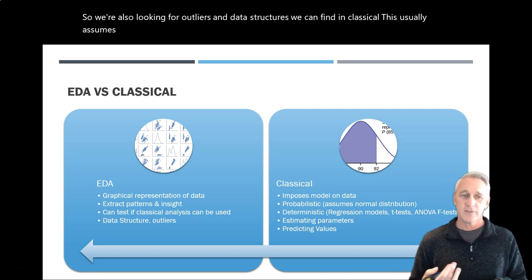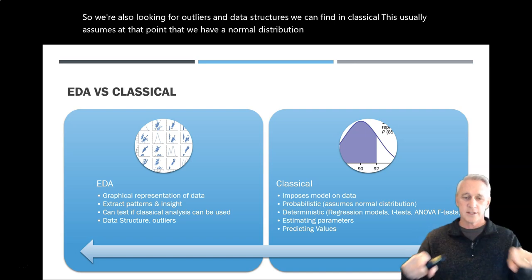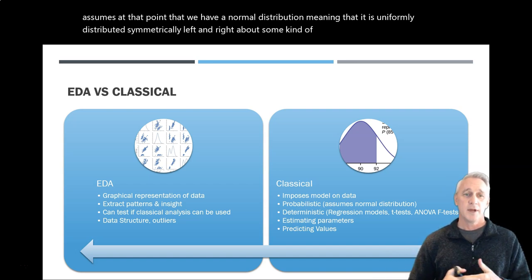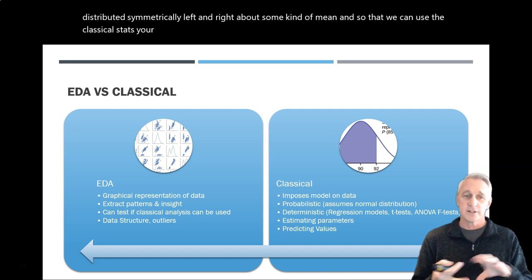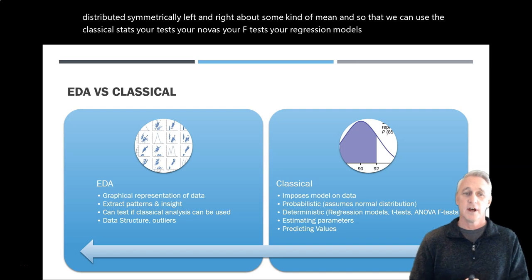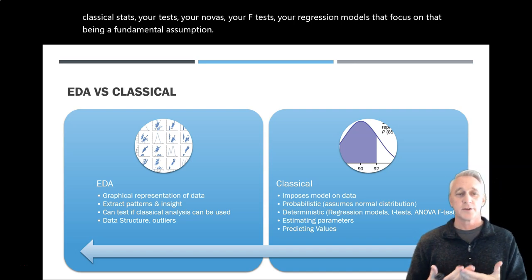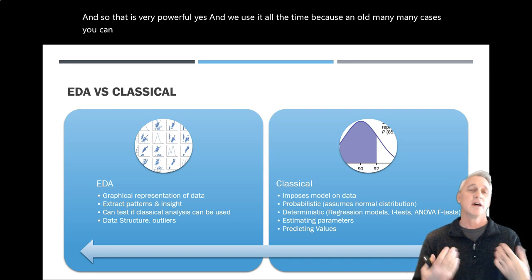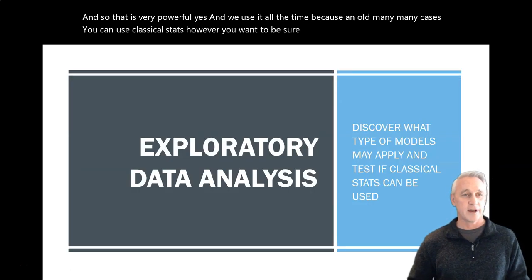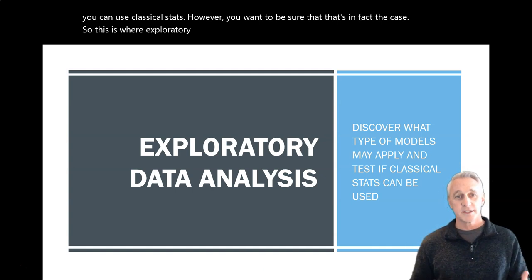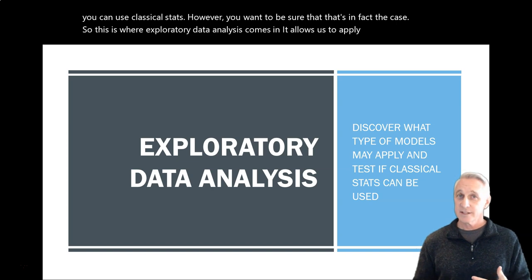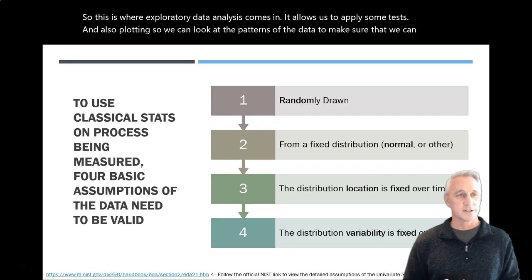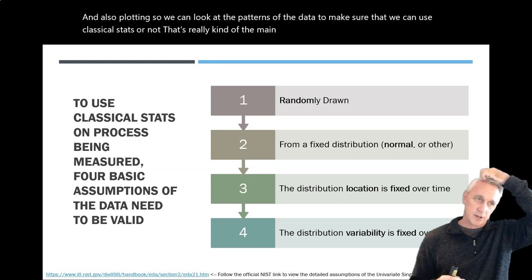And Bayesian analysis is kind of its own bird because this is where we throw in prior knowledge or prior distribution information that we have that can modify what we're looking at. So it's a little bit different bird altogether. So that's why we're going to cover that one separately. So let's really look then, focus down on EDA versus classical. And EDA is really looking at the graphical representation of data. We're looking for patterns to get insight about how is this data structured? Can we look and see different clusters? Can we see or test whether or not we can use classical stats or not? Or do we have to use some different distributions? Because maybe the distribution is not normal at all. Maybe the distribution is skewed highly to one way or another. And that changes the type of analyses you can use. So we're also looking for outliers and unique data structures we can find.